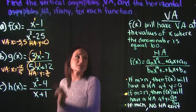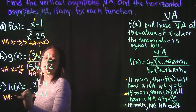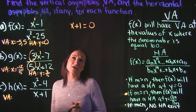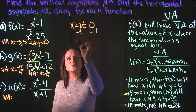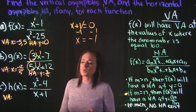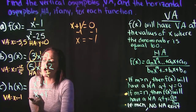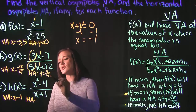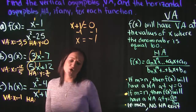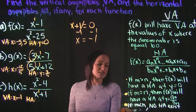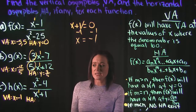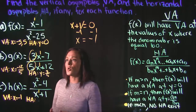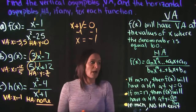For the third example, finding the vertical asymptote: the denominator is x + 1, so x + 1 = 0, giving x = −1. That's our vertical asymptote. For the horizontal asymptote, the degree of the numerator is 2 and the degree of the denominator is 1. The denominator's degree is less than the numerator's, so we use the third rule: there is no horizontal asymptote.